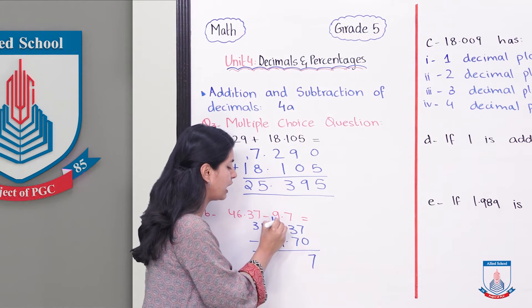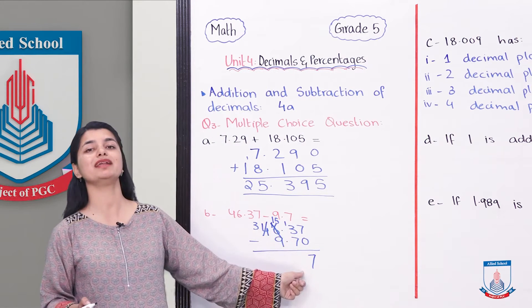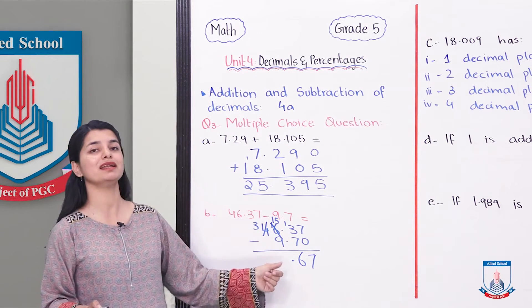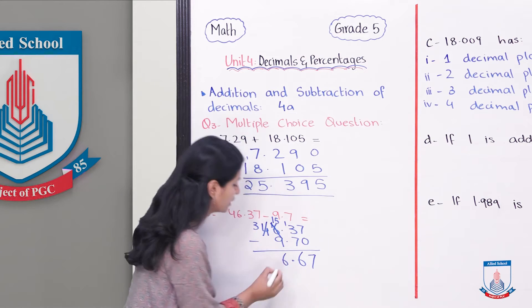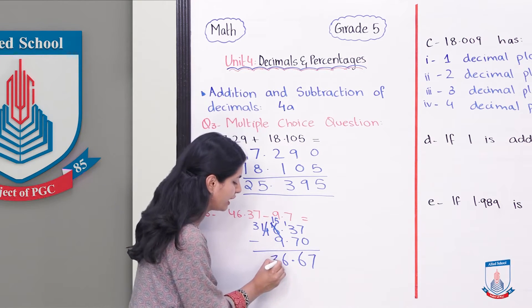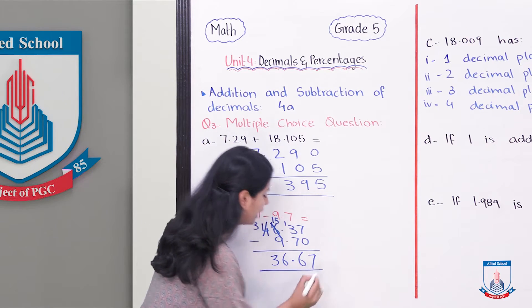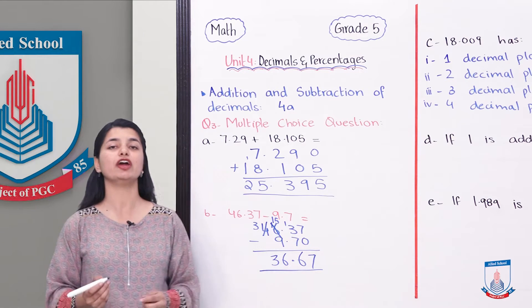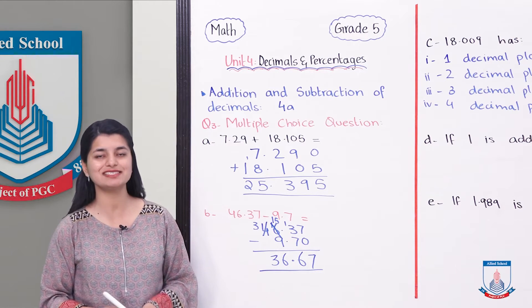And here is 1. 13 minus 7, what is it? It is 6. 15 minus 9, 6. That was 3, so we will have 3 over here. And this will be your answer, 36.67, which you will select from your options. So I hope that you were able to understand this. Let's look at the next part.